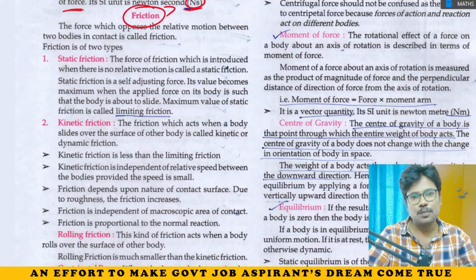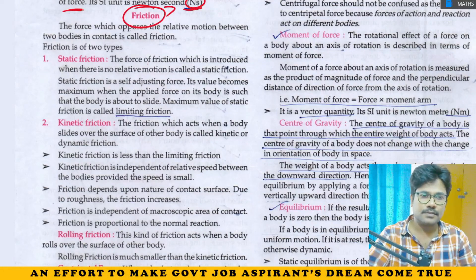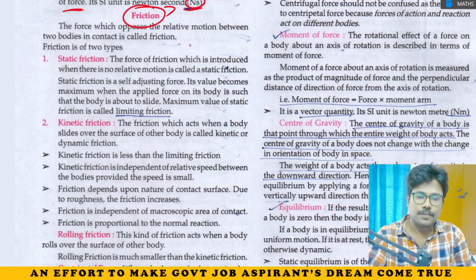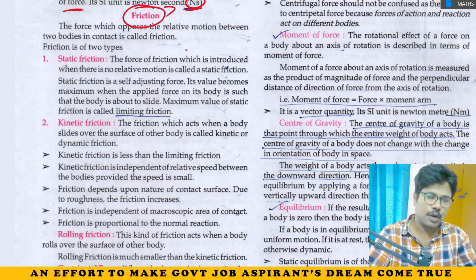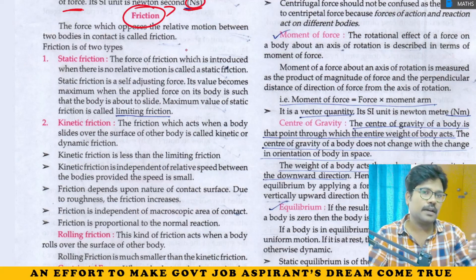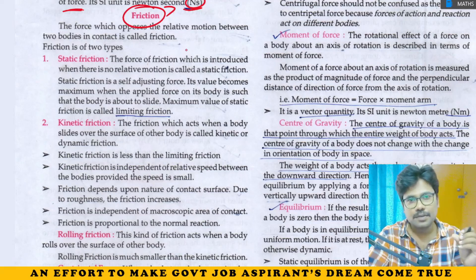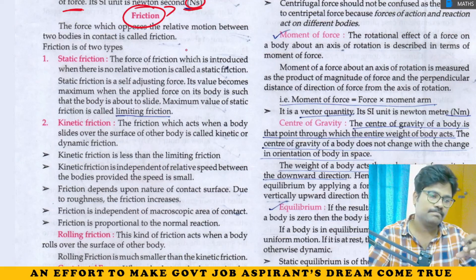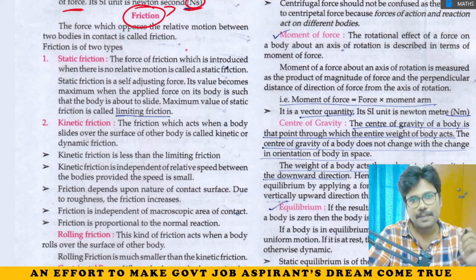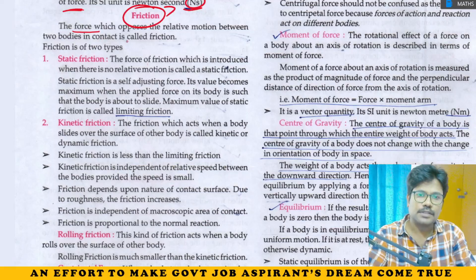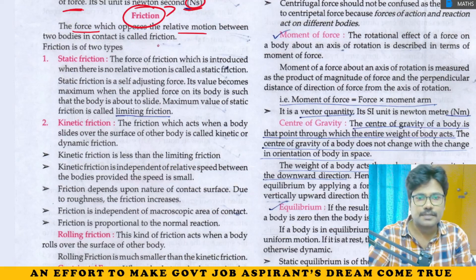Last class we covered Chapter 2, Motion. In this sub-part we discuss friction. Friction is introduced when two bodies are in contact — either at rest or in motion. Because of the nature of different materials, a rapid force arises at the interface. Friction is the force which opposes relative motion between two bodies.